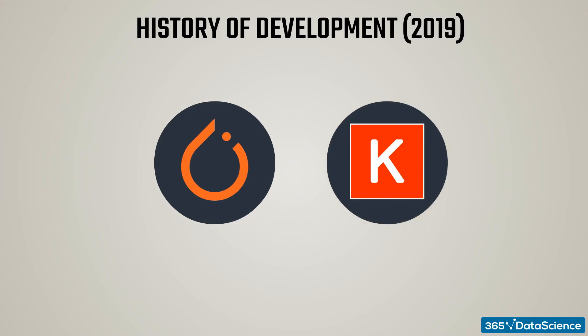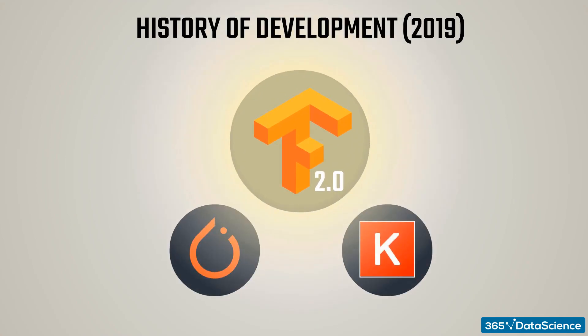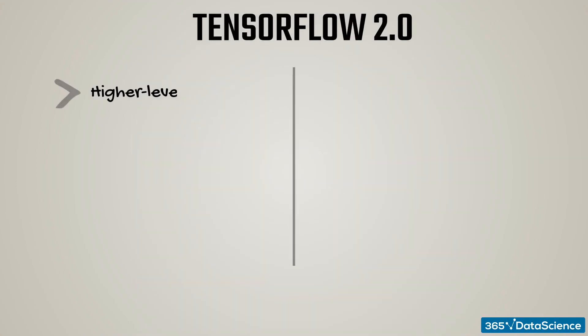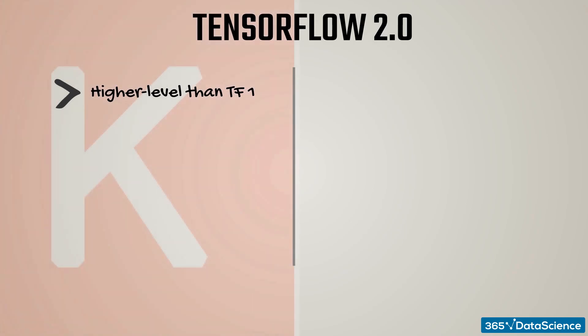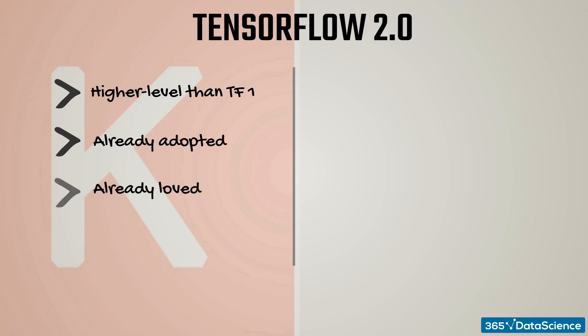This was addressed in 2019, when TensorFlow 2.0 came on the horizon, or at least its alpha version. We can say that was TensorFlow's effort to catch up with the current demand for higher-level programming. Interestingly enough, instead of creating their own high-level syntax, the TF developers chose to borrow that of Keras, as Keras was already widely adopted and people generally love it.